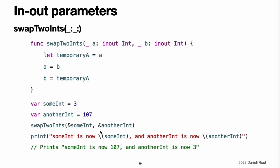Note: in-out parameters cannot have default values, and variadic parameters cannot be marked as in-out. Here is an example of a function called swap2Int that has two in-out integer parameters, a and b. The swap2Int function swaps the value of b into a and the value of a into b by storing the value of a in a temporary constant called temporaryA, assigning the value of b to a, and then assigning temporaryA to b. You can call the swap2Int function with two variables of type Int to swap their values. The names someInt and anotherInt are prefixed with an ampersand when they are passed to the swap2Int function. The example shows that the original values of someInt and anotherInt are modified by the swap2Int function, even though they were originally defined outside of the function.